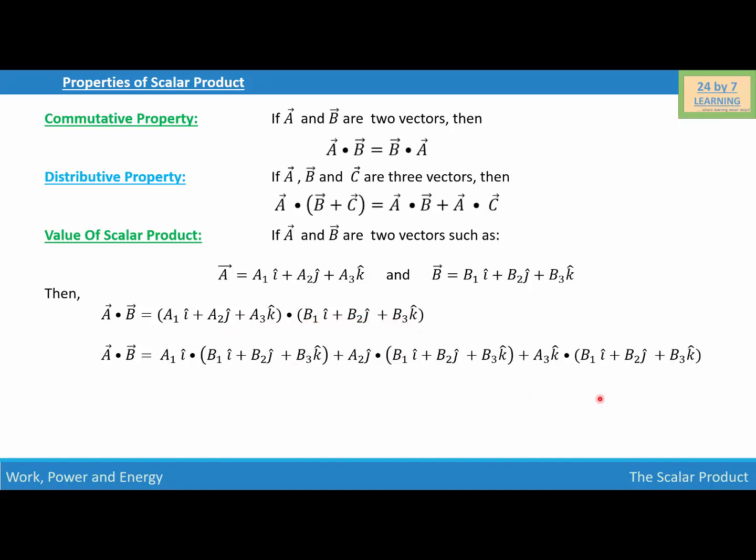If we distribute A1i with vector B, A2j with vector B, and A3k with vector B, then we will get vector A dot vector B equals A1B1 plus A2B2 plus A3B3.